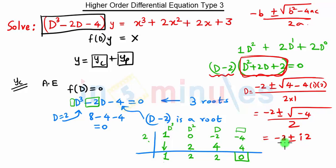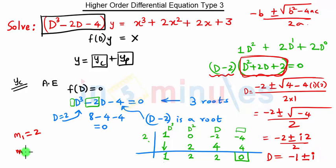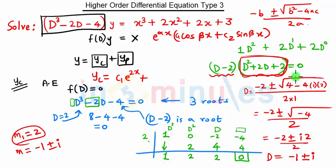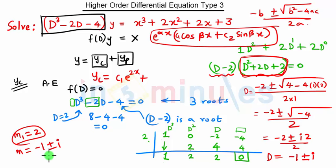Since we have a negative under the root, we have complex roots. √(-4) = 2i, so D = (-2 ± 2i) / 2 = -1 ± i. The roots of the equation are m1 = 2 and the complex conjugate roots -1 ± i. For yc, the real root gives c1·e^(2x), and for complex roots the formula is e^(αx)·(c·cos(βx) + c·sin(βx)).